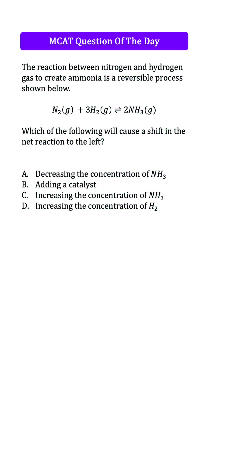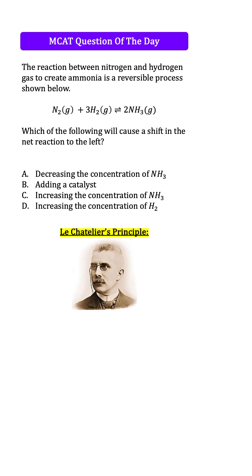MCAT question of the day: the reaction between nitrogen and hydrogen gas to create ammonia is a reversible process shown below. Which of the following will cause a shift in the net reaction to the left? This is about Le Chatelier's principle, which is ultra high yield content bound to come up on the exam at least once — should be free points.